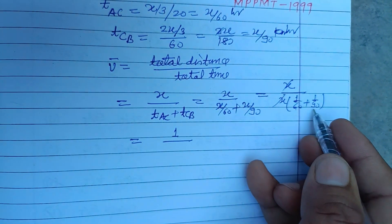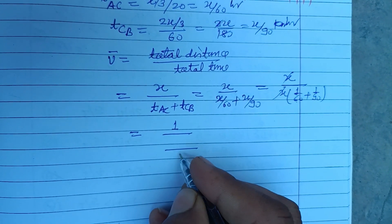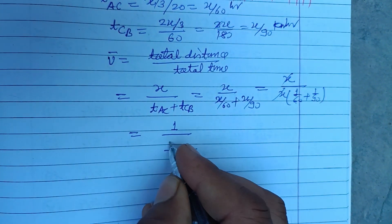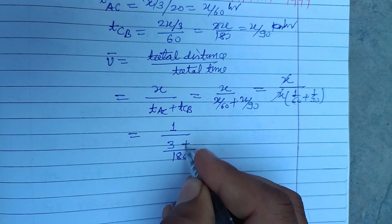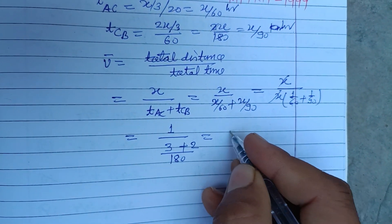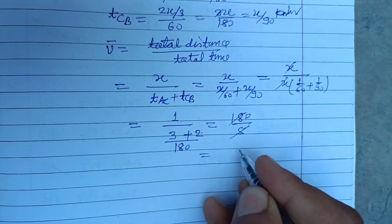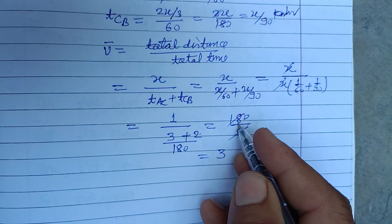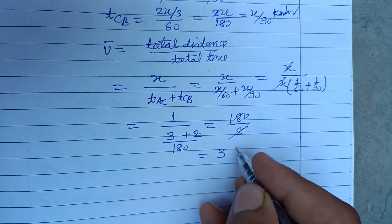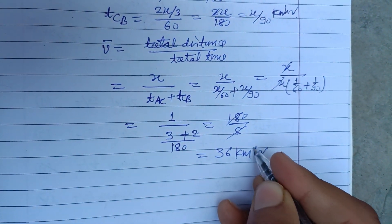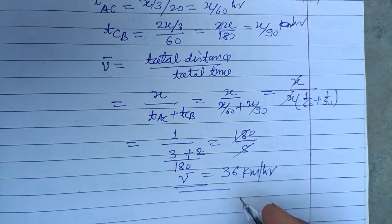The LCM is 180. So 3 plus 2 equals 5. Therefore this is 180 upon 5, which equals 36. So 36 kilometer per hour is the average speed of the car, which is found in option D. So option D is correct.